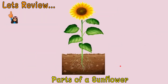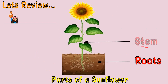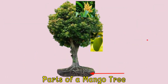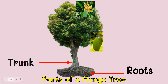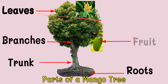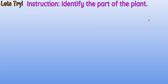Let's take a review, kids. Parts of the sunflower: roots, stem, leaf, flower. Parts of a mango tree: roots, trunk, branches, leaves, fruit, and flowers. Let's try to identify the parts of the plant.